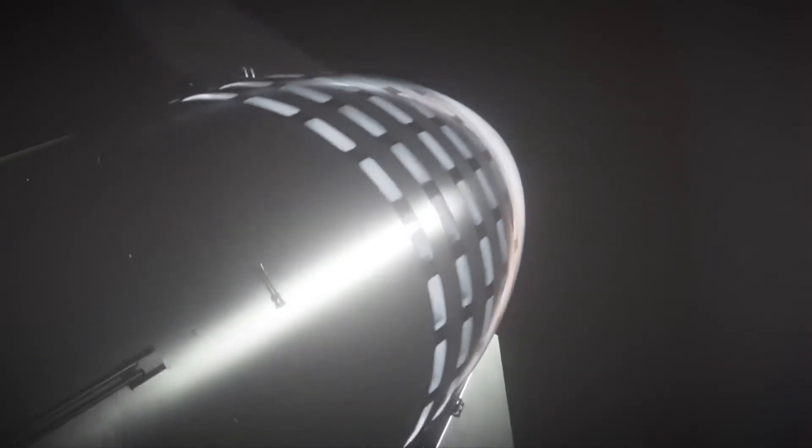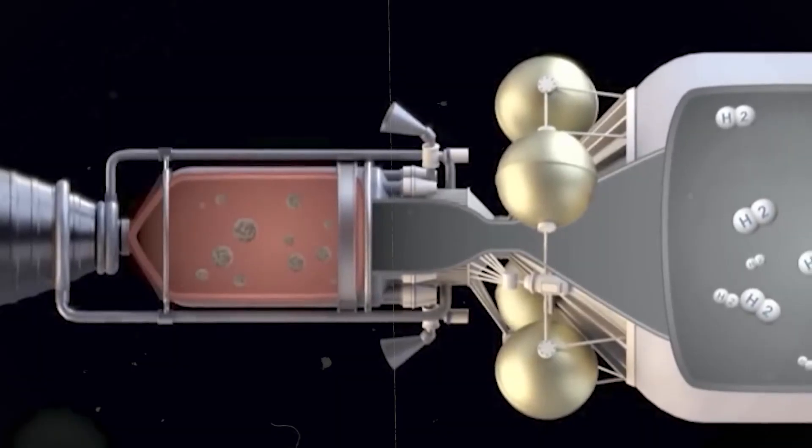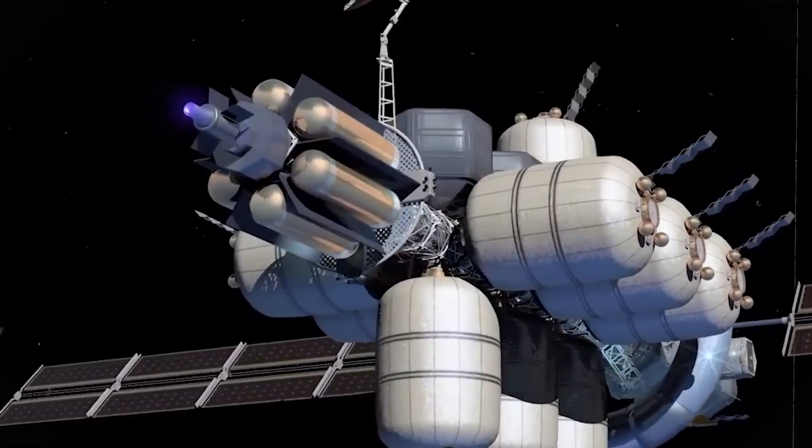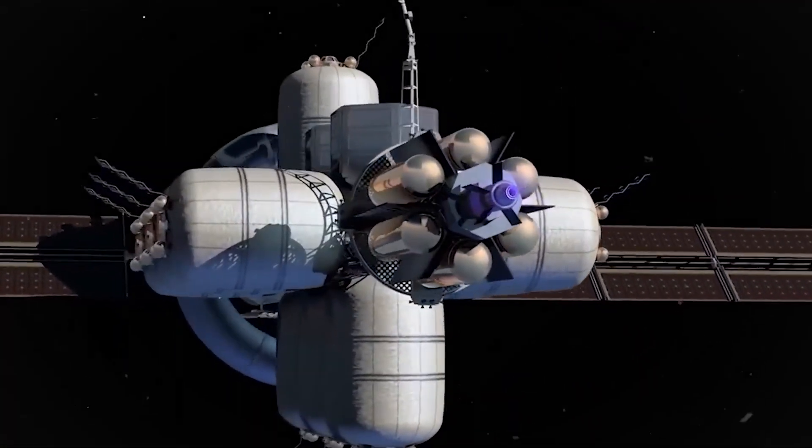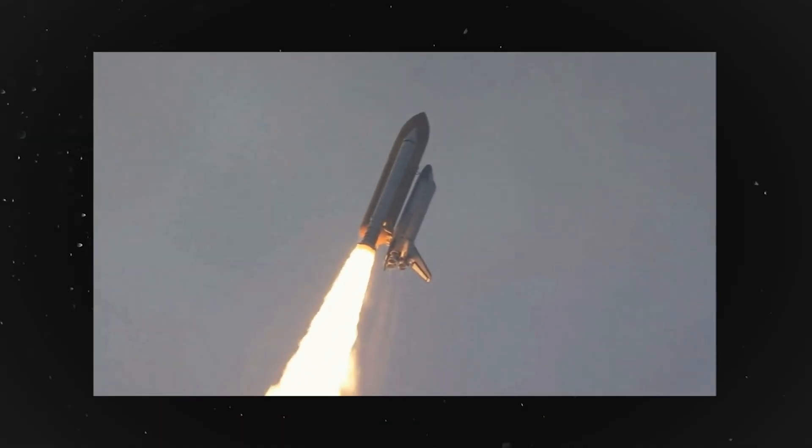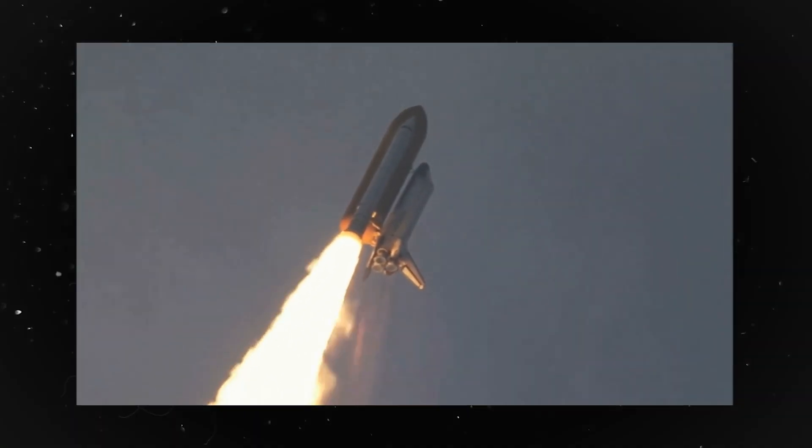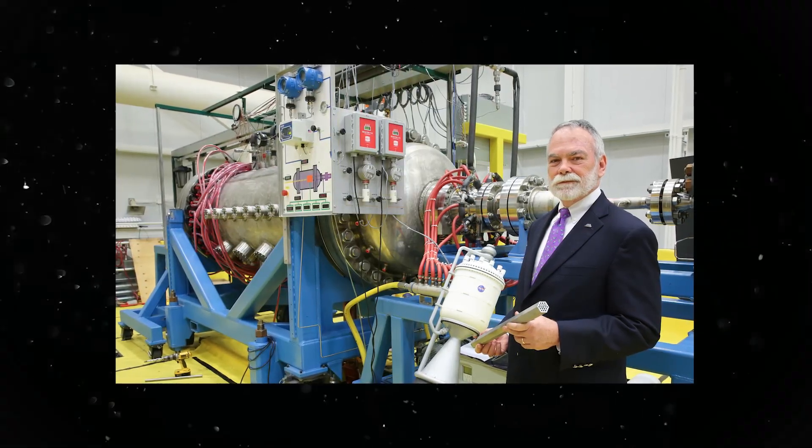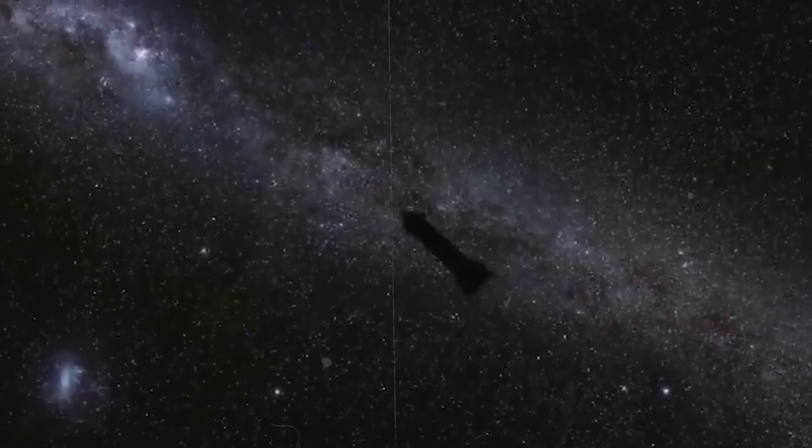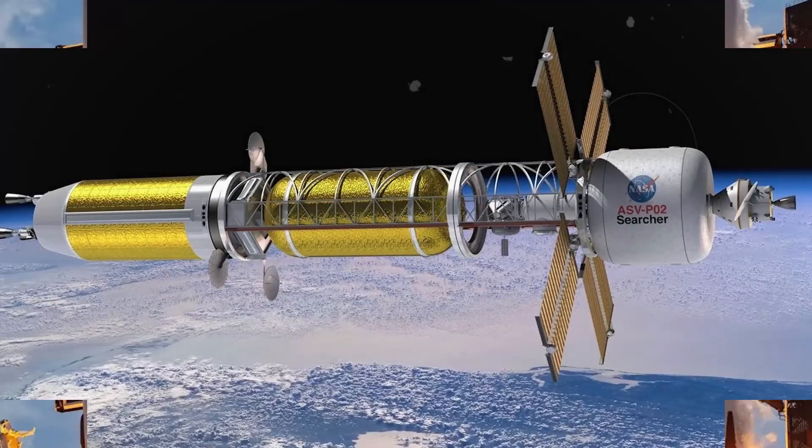The concept that NASA is investing in is called the Thin-Film Isotope Nuclear Engine Rocket, T-Finer. T-Finer is a radical new design that uses thin sheets of radioactive material to generate thrust. This approach has several advantages over traditional nuclear rocket designs, including being lighter, more efficient, and safer. Get ready for a paradigm shift in space exploration. NASA has just invested in this game-changing nuclear rocket concept, promising to revolutionize both astrophysics and deep space travel. Goodbye chemical rockets. Hello, nuclear propulsion.